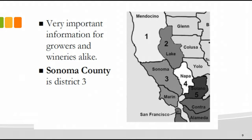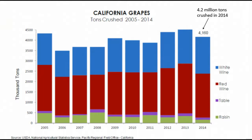There's a summary report, which is just a PDF document, and then you can download the Excel spreadsheet — actually eight different spreadsheets with tons of detail about which varietals were crushed, how much people paid for them, and what the Brix were when they were crushed. In 2014, we crushed 4.2 million tons of grapes in California — 4,160,000 exactly, rounding to 4.2 million.